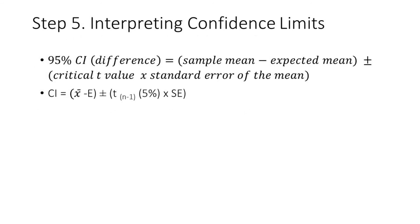For the last step or step 5, we shall compute the confidence interval. Confidence interval is computed by subtracting the expected value from the sample mean. Then either we add or subtract the product of tabular t value and standard error of the mean.